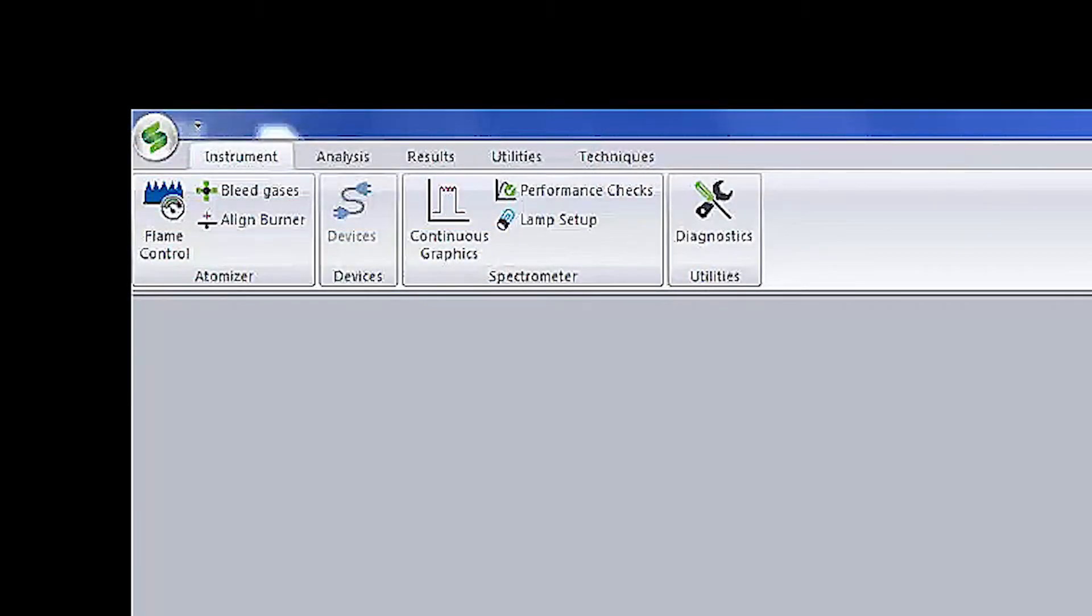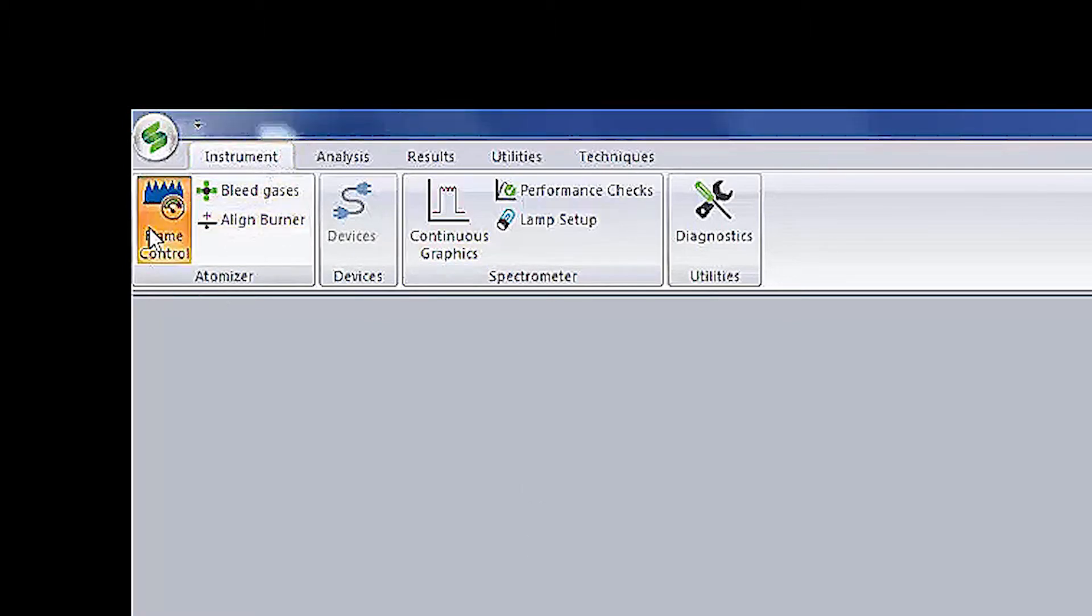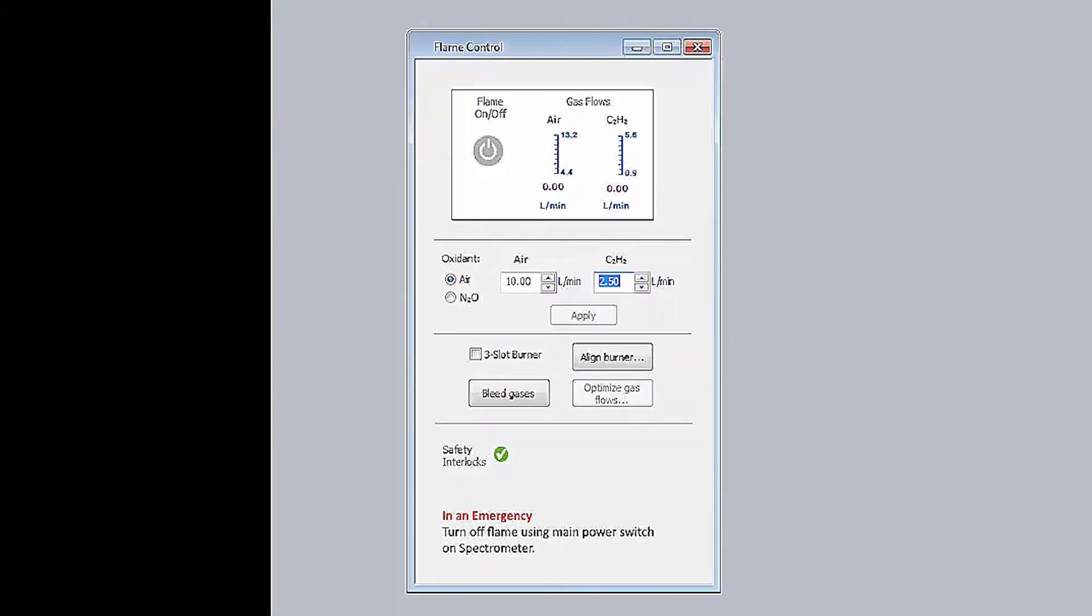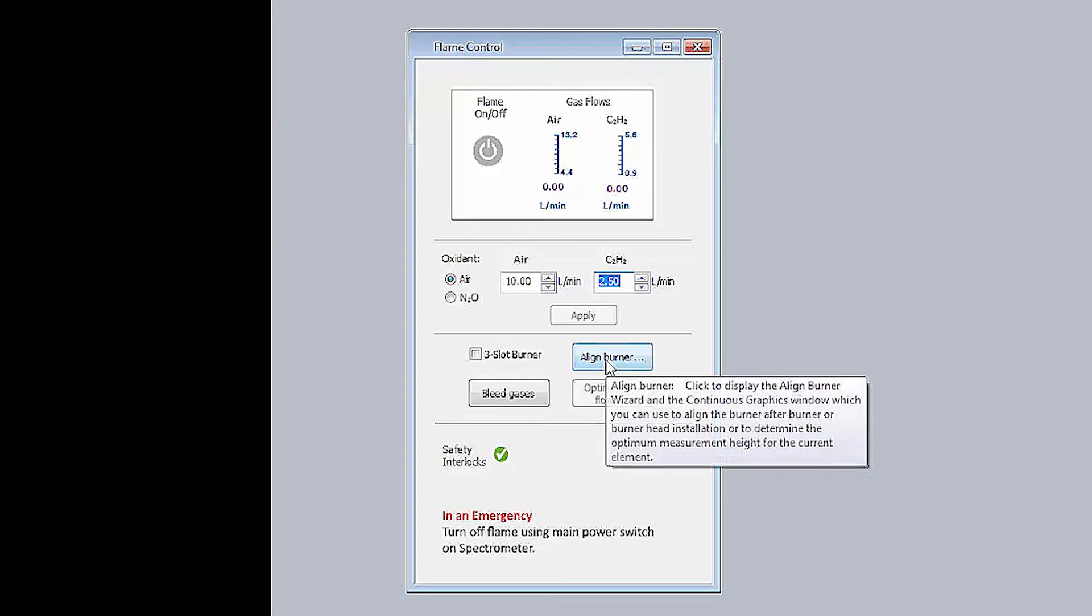Once your lamp is aligned, go to the instrument tab, then the atomizer group and click on the flame control. The flame control window will appear. Click Align Burner.